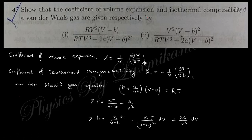The next question asks for the coefficient of volume expansion and isothermal compressibility of a van der Waals gas. The coefficient of volume expansion is beta = (1/V)(∂V/∂T) at constant P, and the isothermal compressibility is k_T = -(1/V)(∂V/∂P) at constant T. Starting from the van der Waals equation of state, we obtain an expression for pressure P.